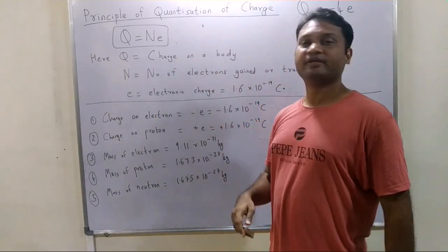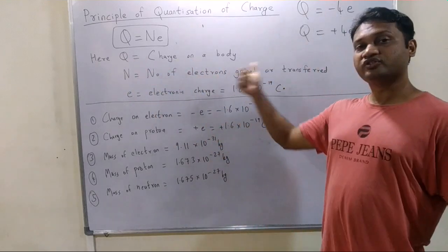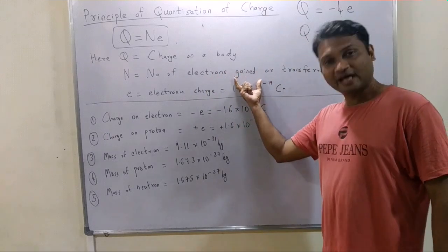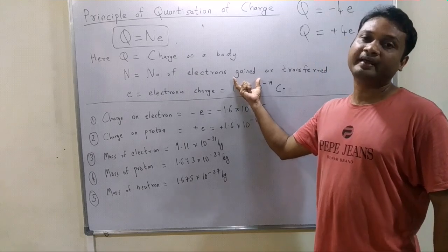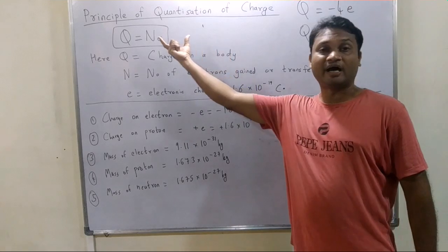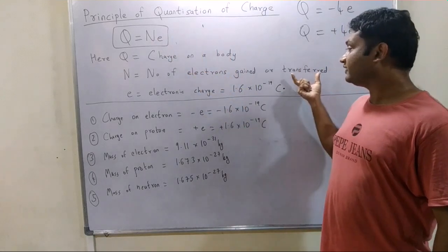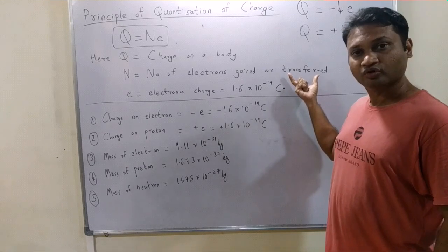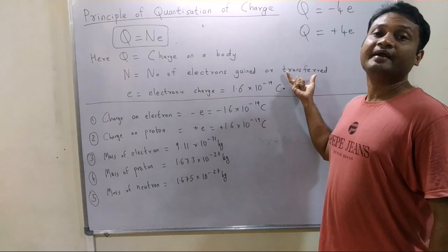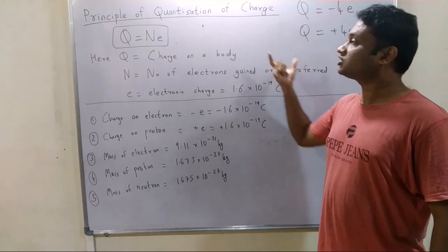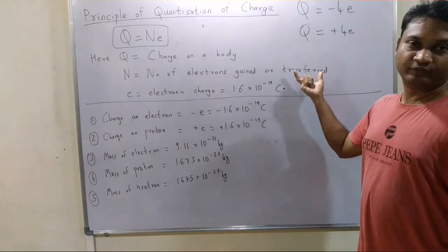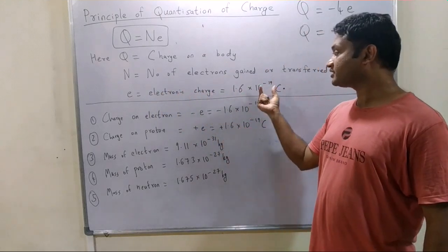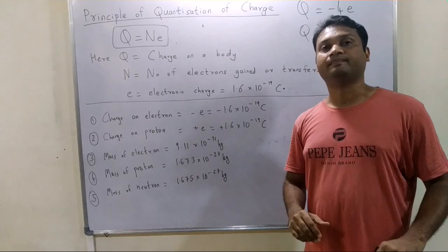Here, Q is the charge on a body, N is the number of electrons gained or transferred, and E is the electronic charge, which is 1.6 × 10⁻¹⁹ coulombs. If the material is electronegative, electrons are gained and the charge is negative (Q = −NE). If the material is electropositive, electrons are transferred and the charge is positive (Q = +NE).